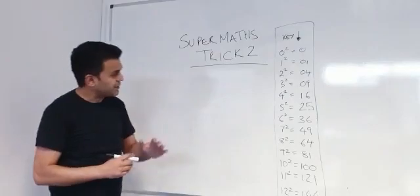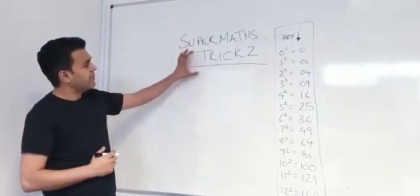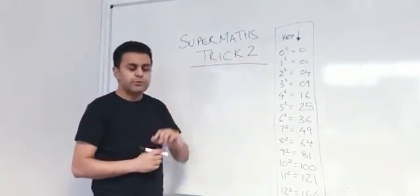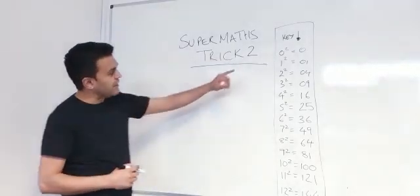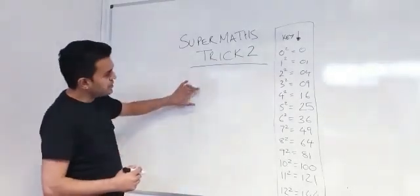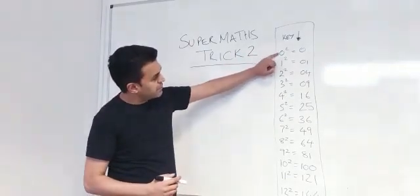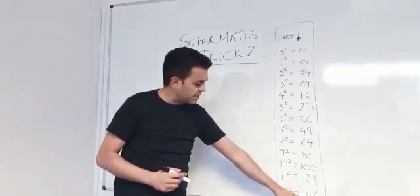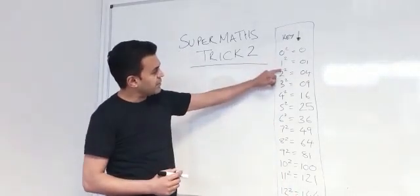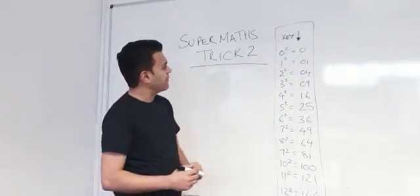Hello, my name is Mohamed Abassi. I'm going to show you a super maths trick type 2. This one is slightly different than the one previously, but the key to know this is that you should know from 0 squared down to 12 squared. 12 times 12 is 144 right down to 1 times 1 which is 1.